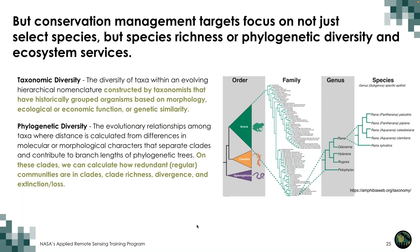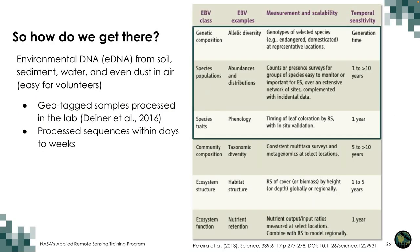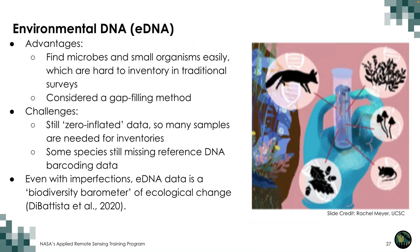Phylogenetic diversity is a key Essential Biodiversity Variable. To measure biological diversity related to genetics, a common tool is environmental DNA (eDNA), collected from soil, sediment, water, or even air dust. It is easy for volunteers to collect — samples are roughly the size of a finger — they are geotagged, sent to a lab, and processed within days to weeks, yielding hundreds to thousands of species per sample.